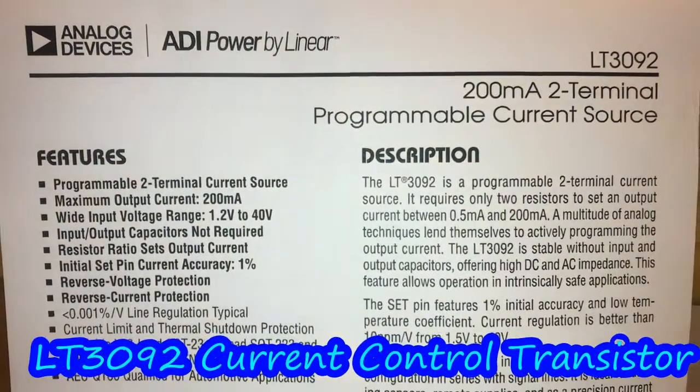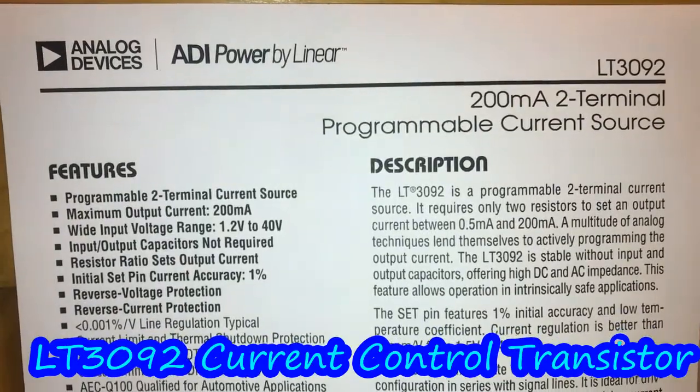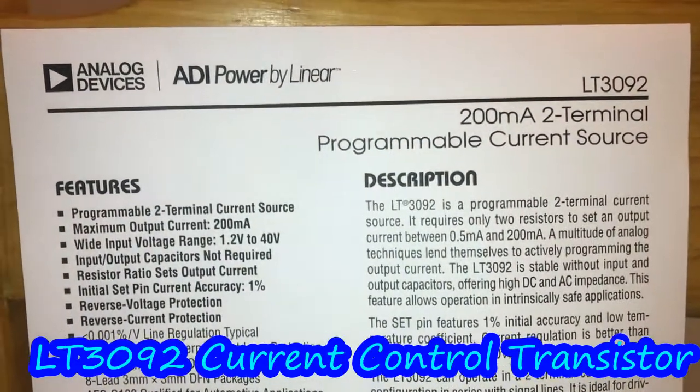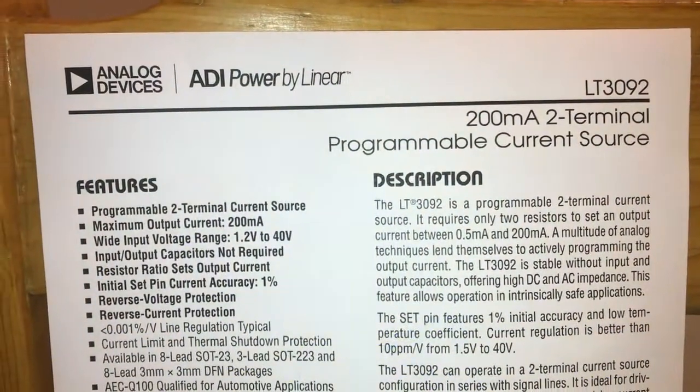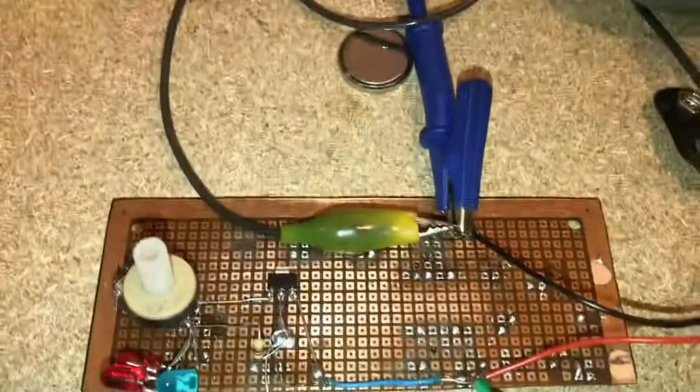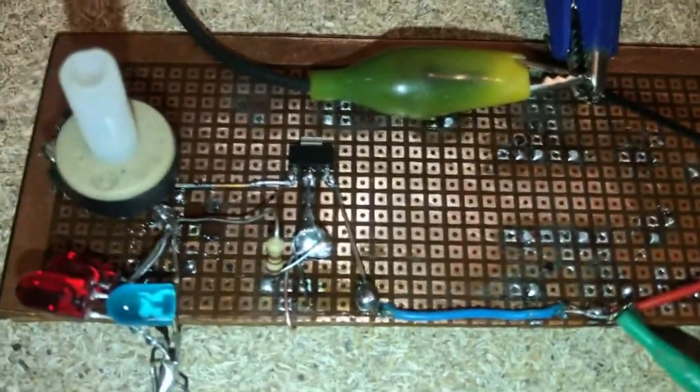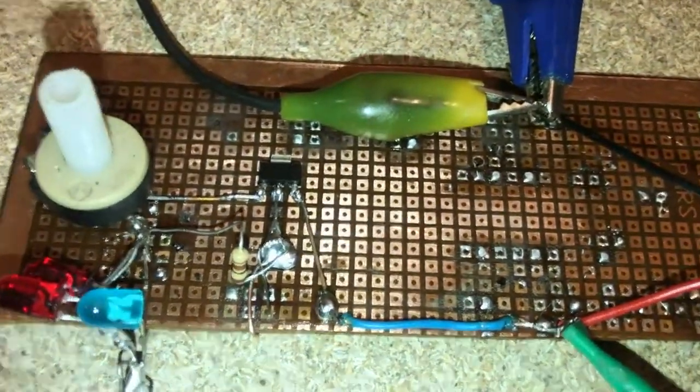Hello guys, thanks for clicking this video. The project is a 200 milliamp programmable current source using the LT3092. This is a super small transistor, but it is very useful and we can control current very easily with this IC.